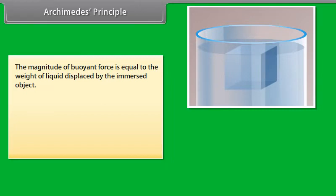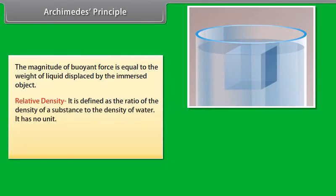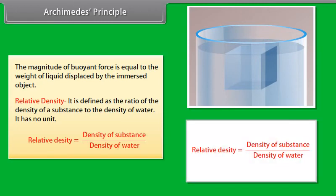Relative density is defined as the ratio of the density of a substance to the density of water. It has no unit. Relative density equals density of substance divided by density of water.